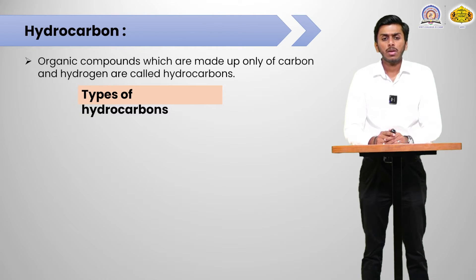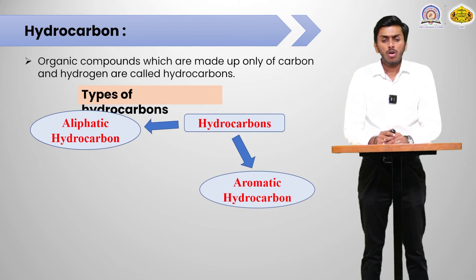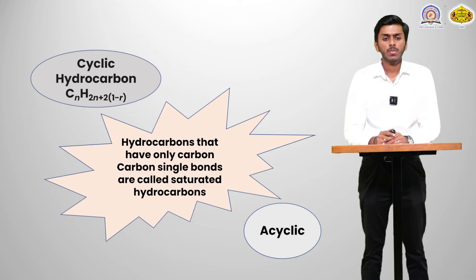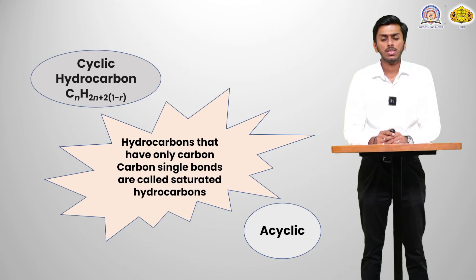Types of hydrocarbons: hydrocarbons are divided into two categories — aliphatic hydrocarbons and aromatic hydrocarbons. Aliphatic hydrocarbons are further divided into saturated hydrocarbons and unsaturated hydrocarbons. Saturated hydrocarbons have only carbon-carbon single bonds, and can be further classified into cyclic hydrocarbons and acyclic or straight-chain compounds.